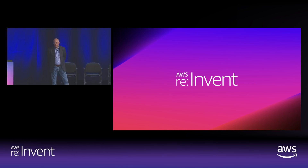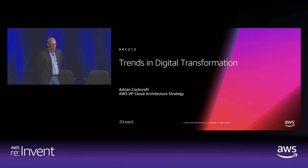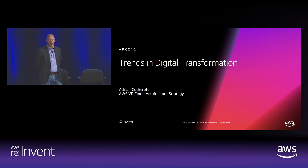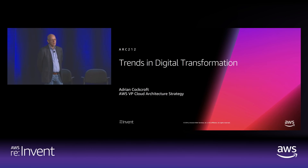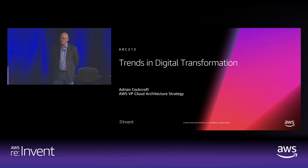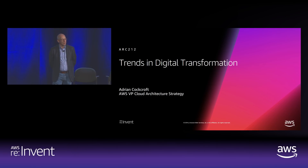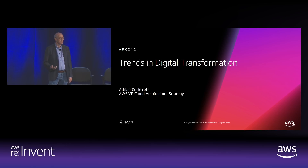I'm going to talk a bit about digital transformation this afternoon. My name is Adrian Cockroft, AWS VP of Cloud Architecture Strategy. I spend a lot of my time traveling the world, doing keynotes at AWS summits, and talking to executives and management about how they're transforming their organizations. This presentation is a distillation of what I've learned looking at the patterns of what people are doing.